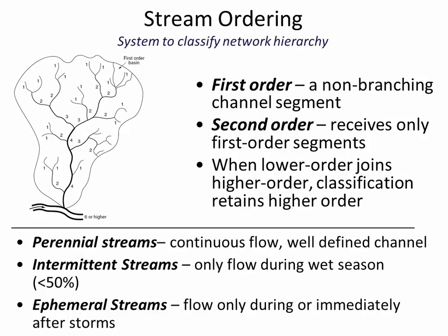Besides stream order, streams are classified by how often water flows through them. An ephemeral stream only flows occasionally, immediately after a storm — like the flash flood video from Arizona. An intermittent stream flows roughly half the time; a nearby stream on the instructor's commute stays full for three or four days after rain but not always. A perennial stream always has water in it and has a well-defined channel.